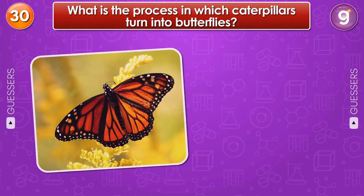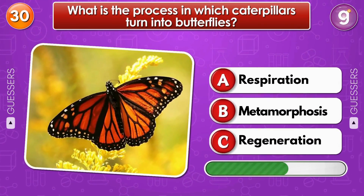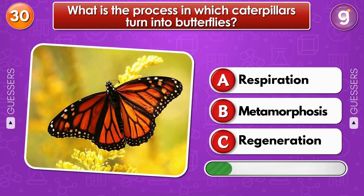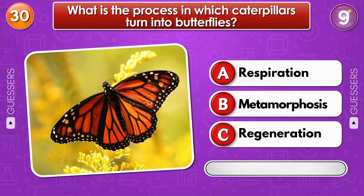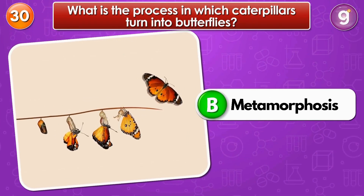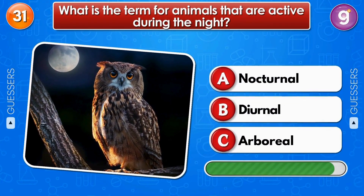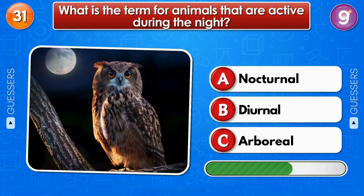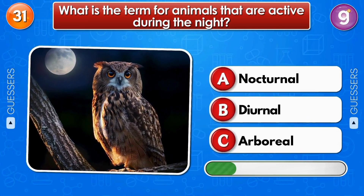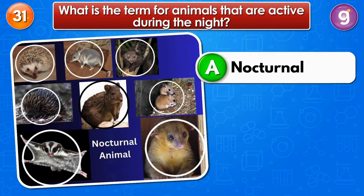What is the process in which caterpillars turn into butterflies? Metamorphosis. What is the term for animals that are active during the night? Nocturnal.